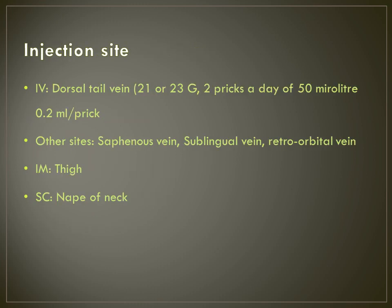When injecting rats or withdrawing blood intravenously, the preferred vein is the dorsal tail vein. Use a 21 or 23 gauge needle. Do not do more than 2 pricks per day; in one prick you can get 0.2 ml or 50 microliters. Other sites for venous blood withdrawal are the cephalic vein, sublingual vein, and retroorbital vein. For IM injection the preferred site is the thigh, and for subcutaneous injection the preferred site is the scruff at the nape of the neck.